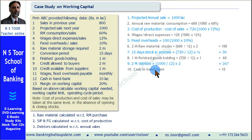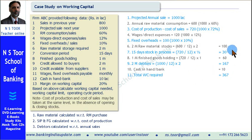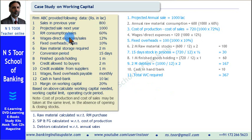Now cash in hand — that is also part of working capital. Cash in hand for meeting various expenses is 10 lakh, so we directly take it as 10. This gives us the total working capital required: 367. That is the answer to our first question — what is the amount of working capital needed to achieve sales of 10 crore, based on these expenses and holding periods. This is the amount of current assets, i.e., working capital required by this firm.